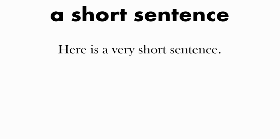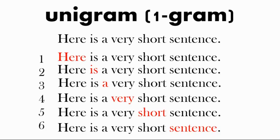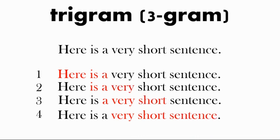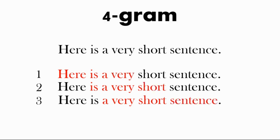Here is a very short sentence. The unigrams are just the words: here, is, a, very, short, sentence. The bigrams are two words together: here is, is a, a very, very short, and short sentence. The trigrams — there are four: here is a, is a very, a very short, and a very short sentence. Finally, the four-gram is four words in a row: here is a very, is a very short, and a very short sentence.